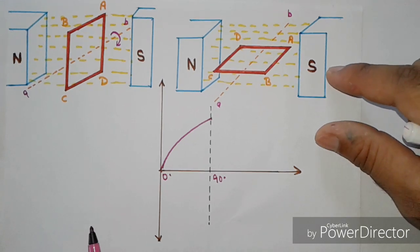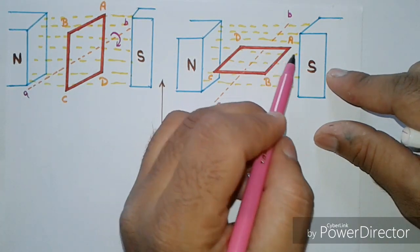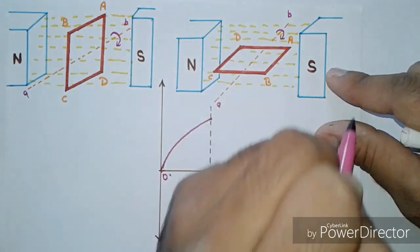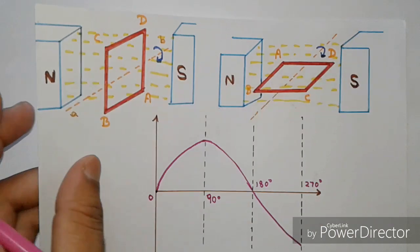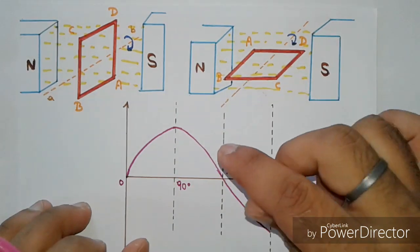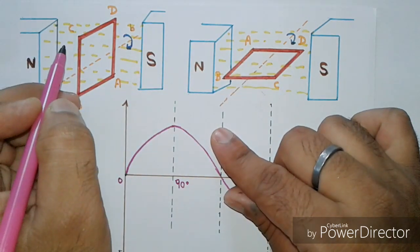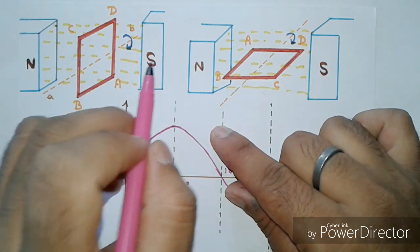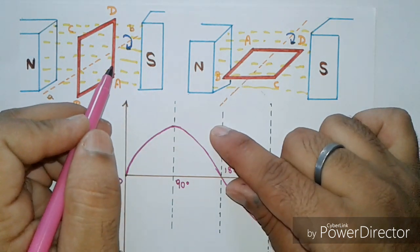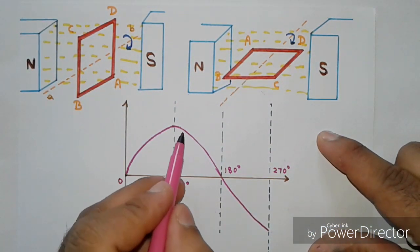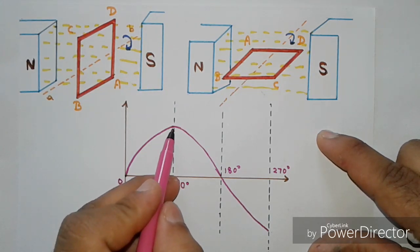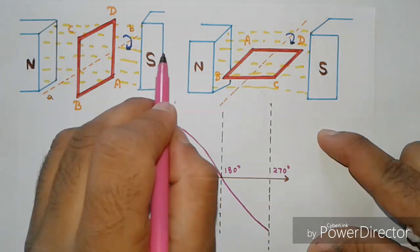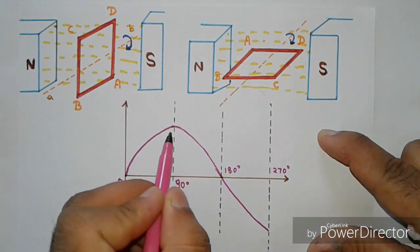The conductor rotates one more time, another 90 degrees in the clockwise direction, and the rectangular coil comes to a vertical position. Now the conductor and the magnetic flux lines are parallel to each other, so no flux is being cut by the conductor and therefore no current is induced. As you can see in the waveform, it is reduced back to zero.